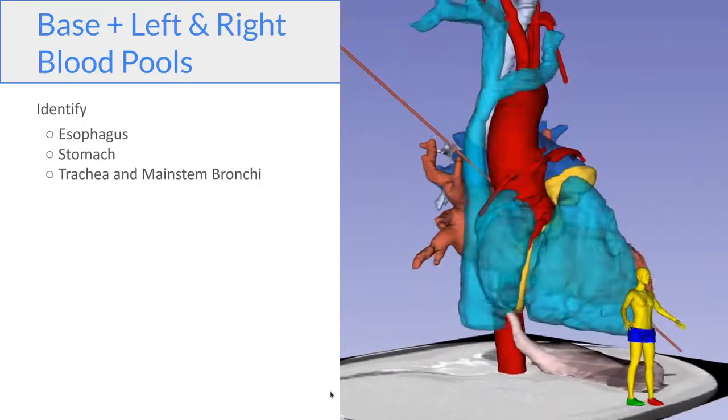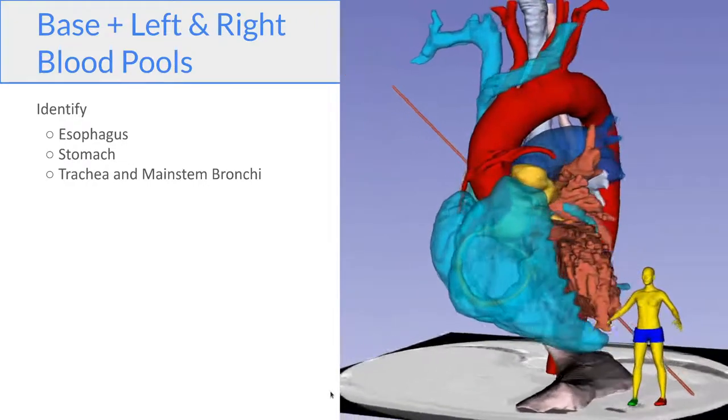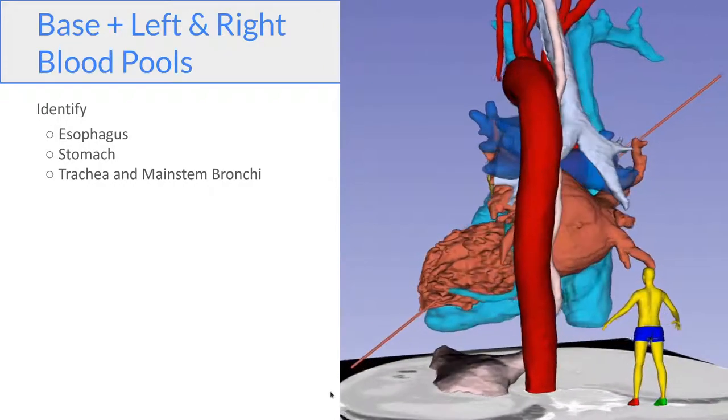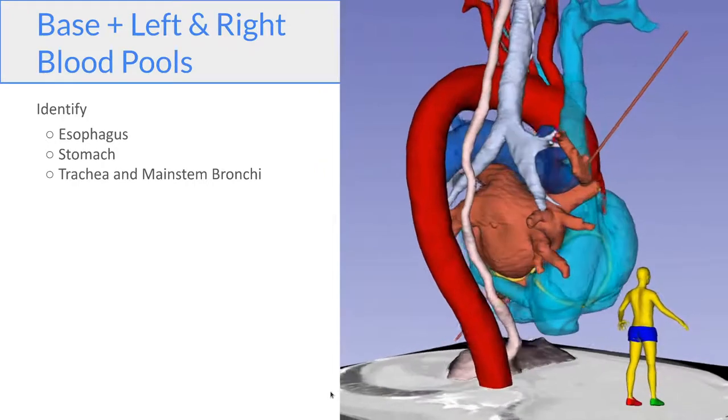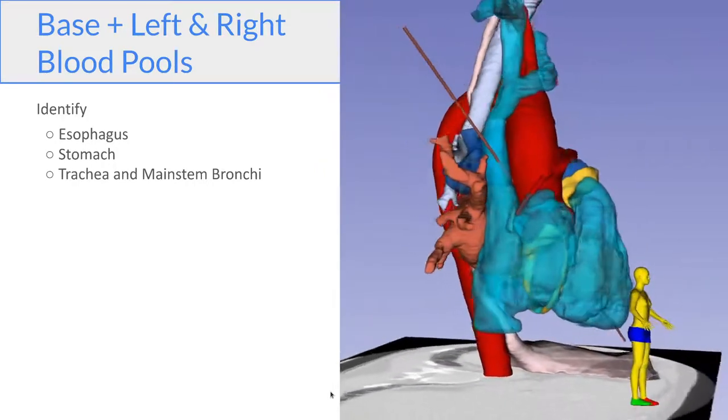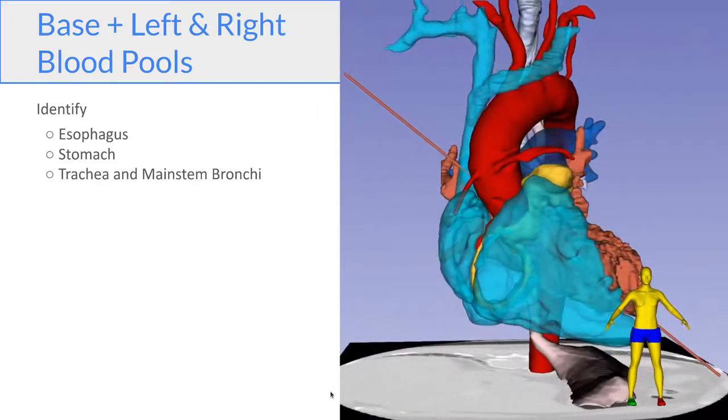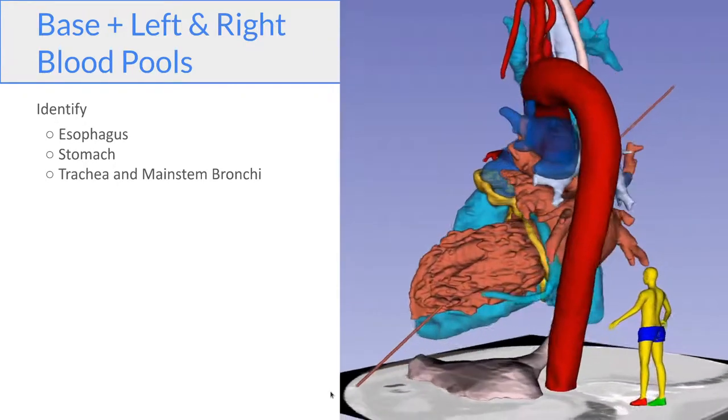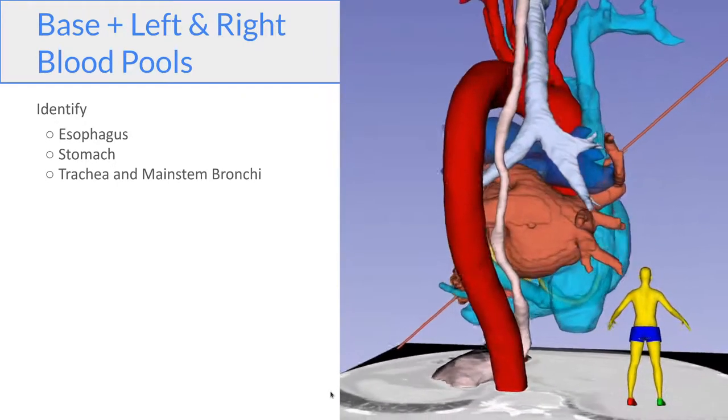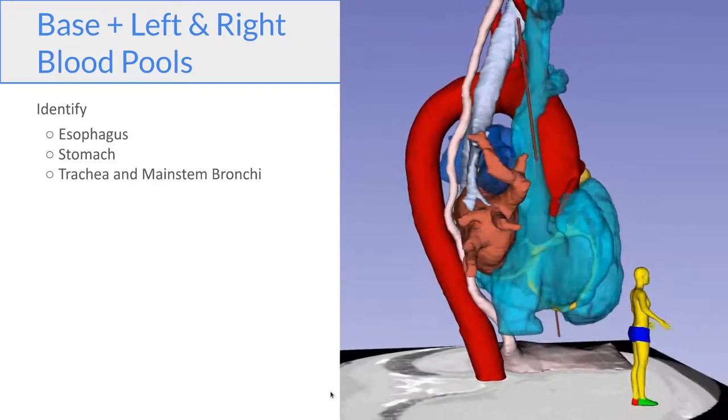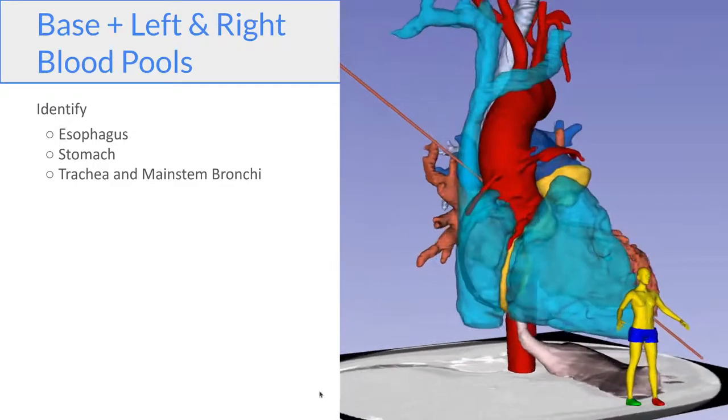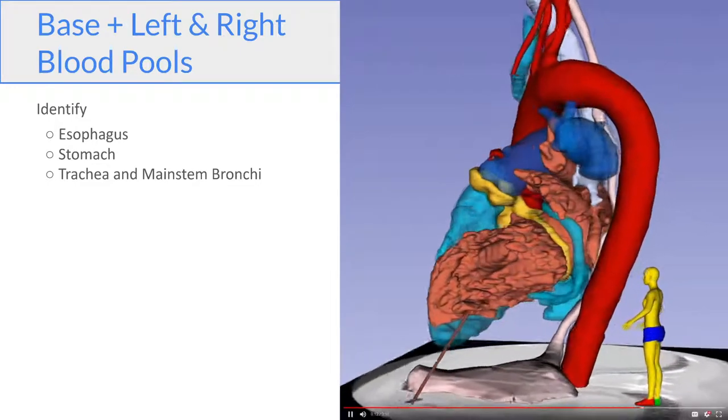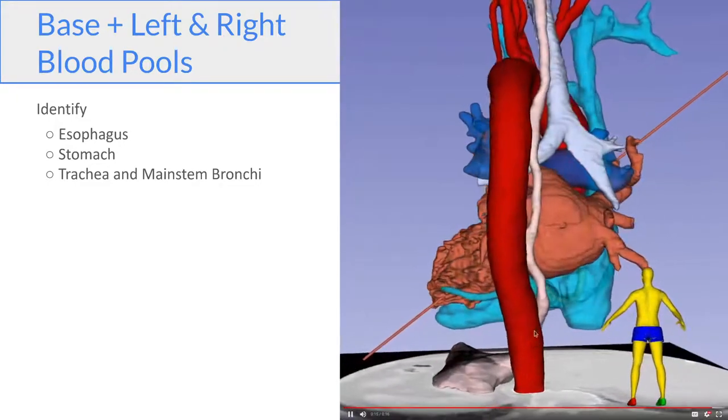And here we put everything together. It may be a bit overwhelming at first, but if you look at it piece by piece, and remember how it was assembled, with the left blood pool in the orange and red, and the right blood pool in the light and dark blue, and the heart base in the center anchoring everything together. So you can see the relationship between the pulmonary artery and the left atrium, between the pulmonary veins. And as the model turns around, note also the location of the esophagus and the airway.